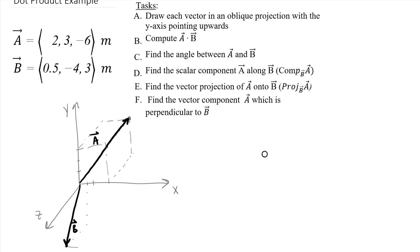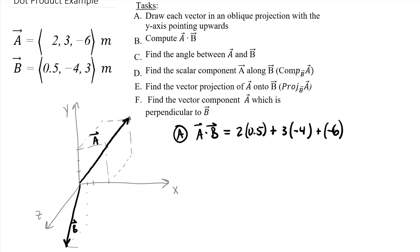For part A we want to find the dot product of these two vectors. Since we already have the components, this is a straightforward computation. A dotted with B equals the sum of products of the components: two times 0.5, plus three times negative four, plus negative six times three. Carrying that through we find a value of negative 29 meters squared. Note that this is the dot product, not the component of A along B.